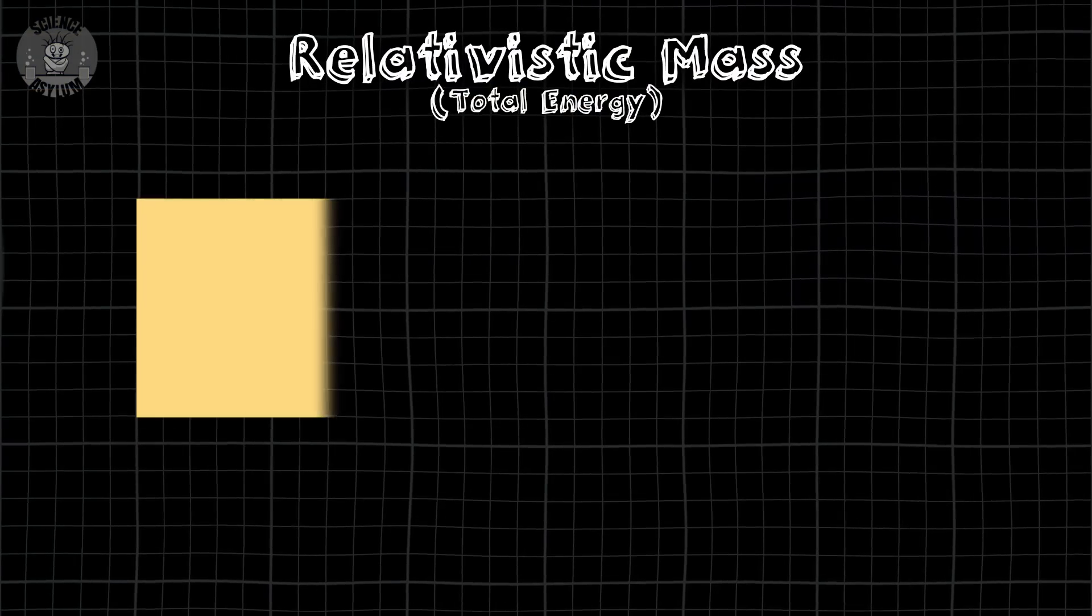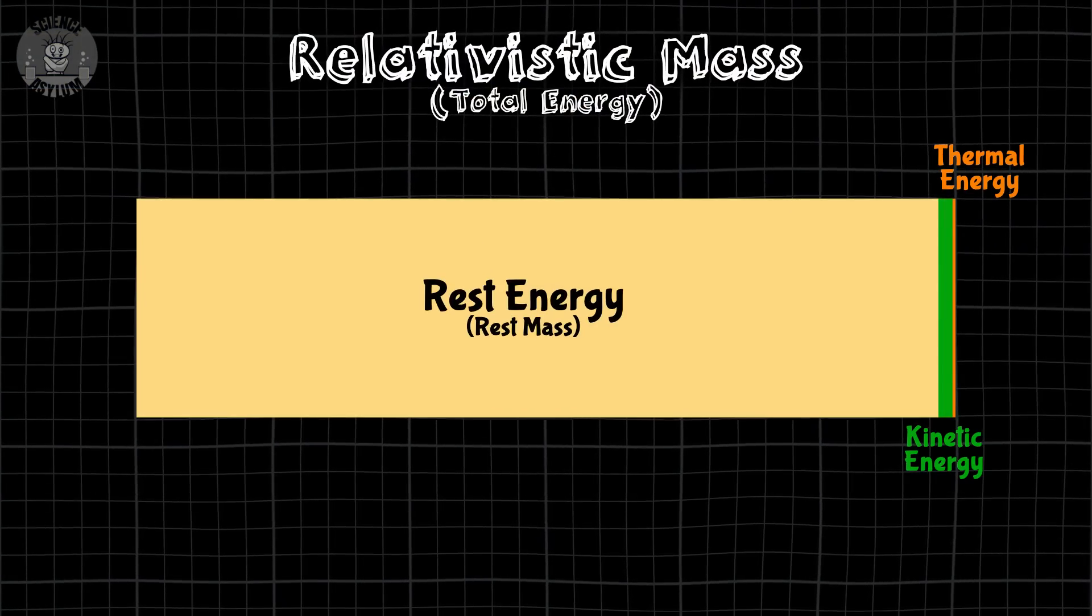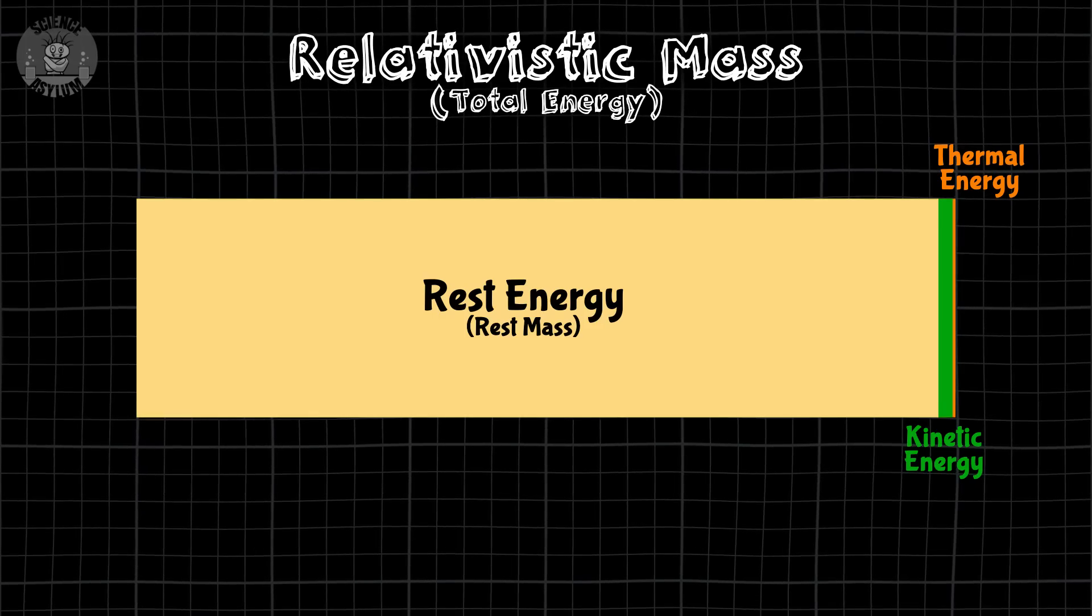But there's one type of energy that usually dominates. Rest energy. The part of energy associated with rest energy is often called rest mass. So, the distribution usually looks something like this. It's almost all rest mass. So, we don't have to distinguish most of the time. Why do we call it rest mass?